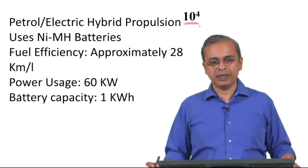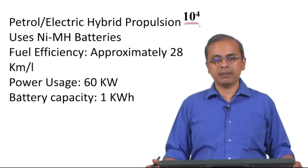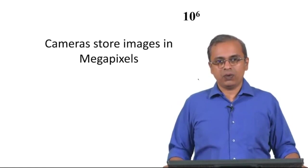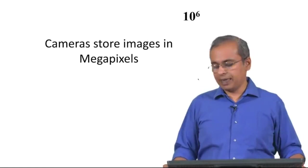Power usage 10 power 4 are more sophisticated vehicles which may use a combination of petrol engines as well as electric hybrid propulsion system. 10 power 6, then you come across this kind of power usage in large capacity. Similar scale of quantity is the kind of storage that exists in our modern day cameras.